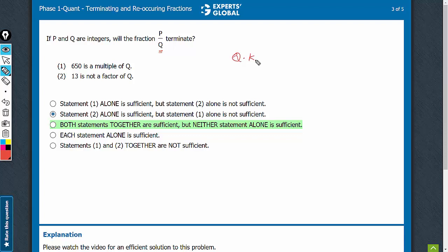So, Q into some integer K is equal to 650. This can be written as 50 into 13. See, 50 is made up of all 5s and 2s, but there is a 13 also here. Q into K is equal to 50 into 13.